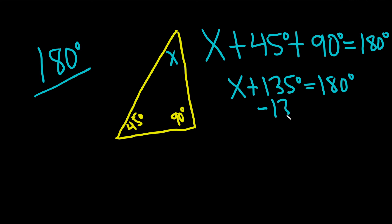Then we can just subtract 135 from both sides, and that's going to give us x equals 45 degrees, and that would be the final answer.